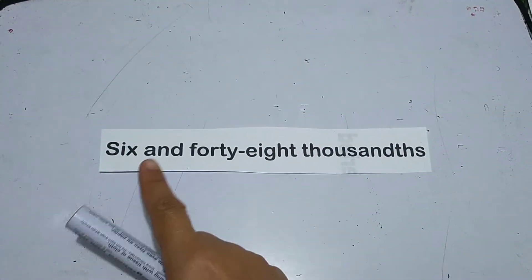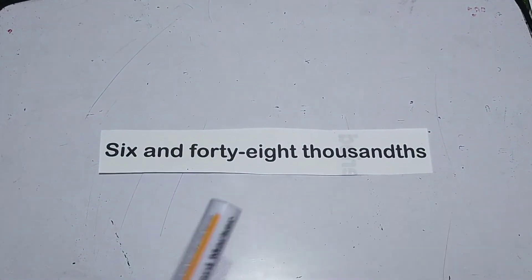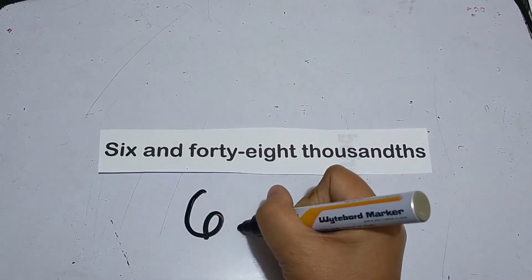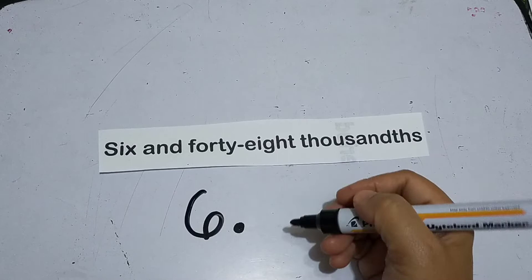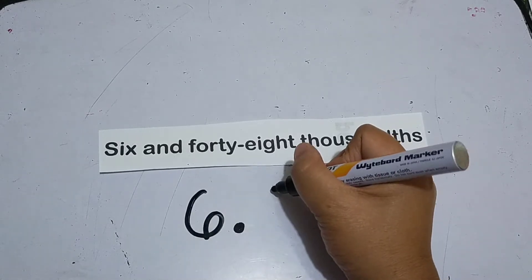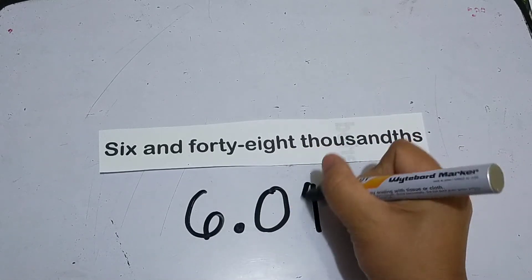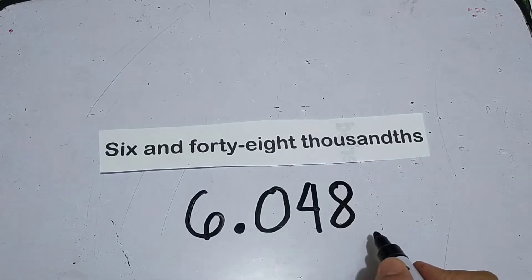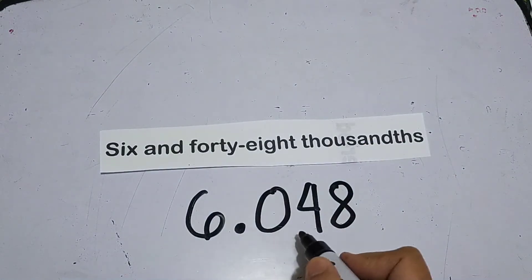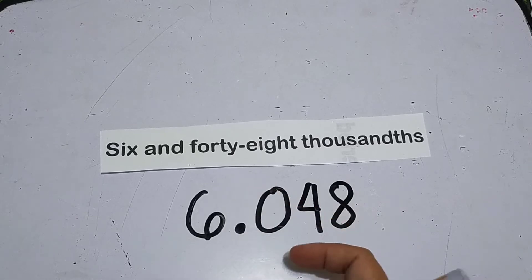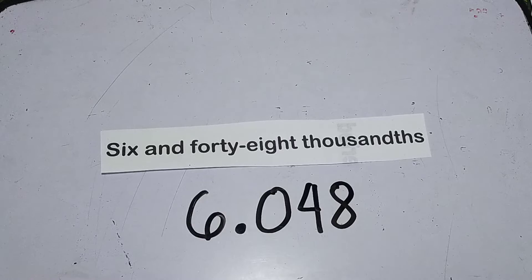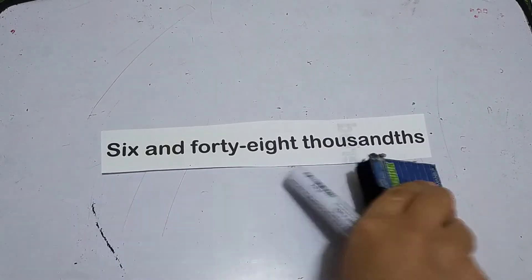Another example: six and forty-eight thousandths. Six and, so decimal point is 'and,' right? Forty-eight thousandths. It can't be six and forty-eight without the zero, because that would just be six and forty-eight hundredths.